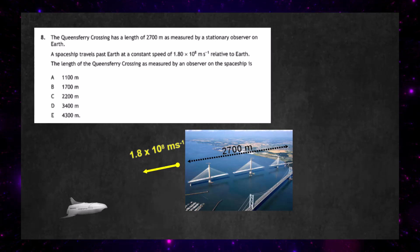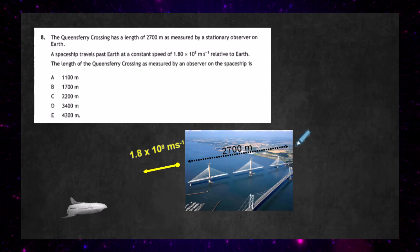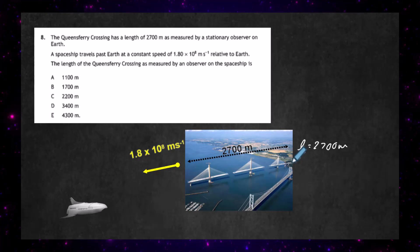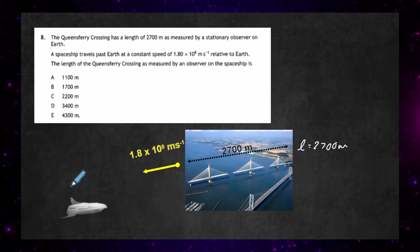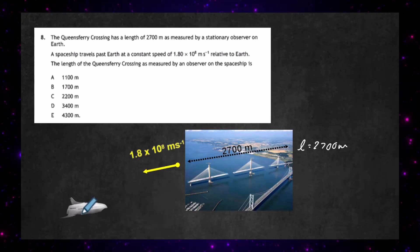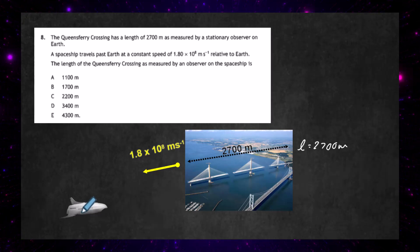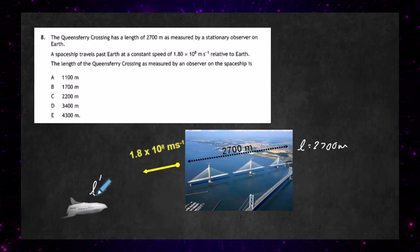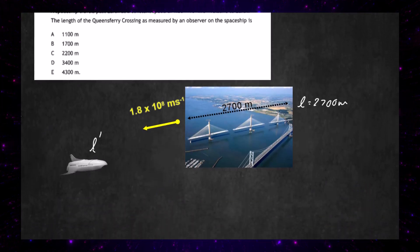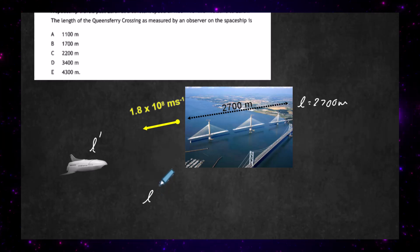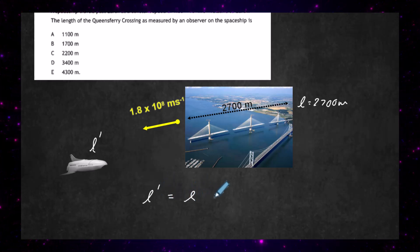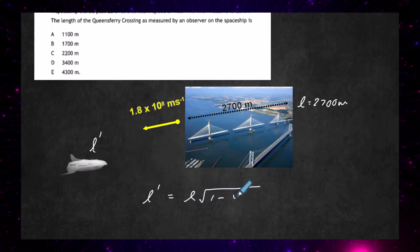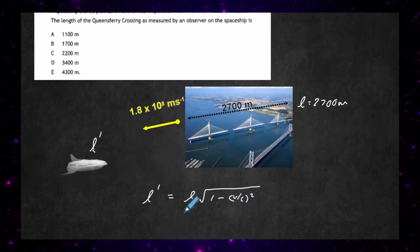The length of the bridge measured on the earth is going to be 2700 meters, because that's measured in the reference frame of the earth. Now for the spacecraft, the observer sees the bridge and the earth moving past them at 1.8 times 10 to the power 8 meters per second, so they'll measure a length called l prime relativistically. We know from our relationship sheet that l prime equals the length of the bridge in the earth's reference frame times the square root of 1 minus v upon c all squared.